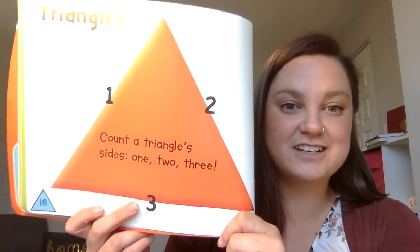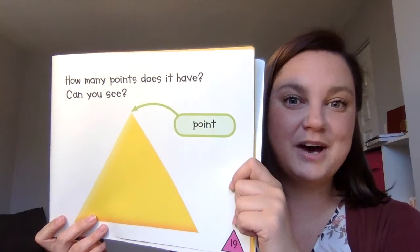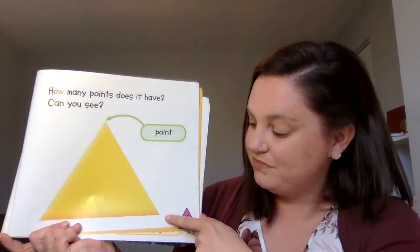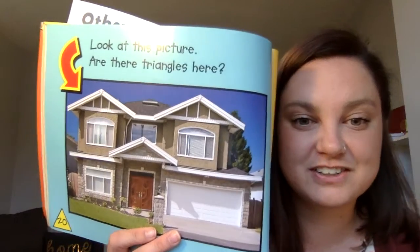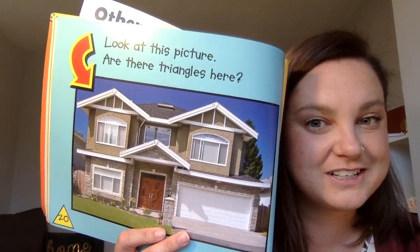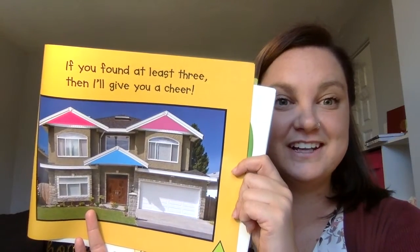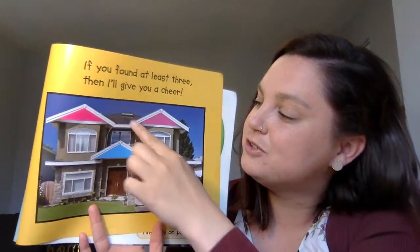How many points does it have? Are there triangles here? Do you see any triangles in this house? Maybe you can go outside in a little bit and look at your house and see if you see any triangles. If you found at least three, I'll give you a cheer. One, two, and three!